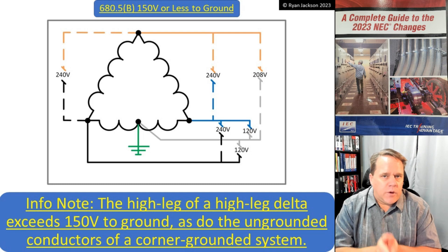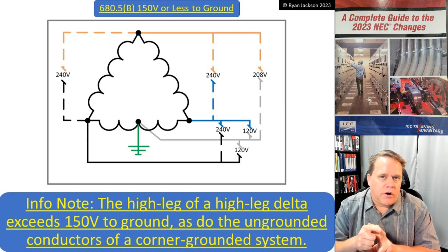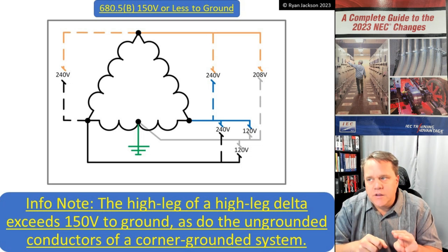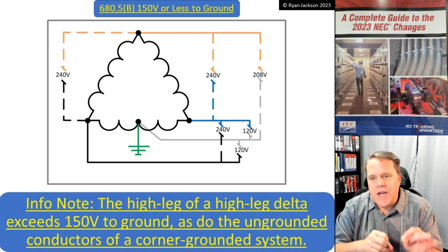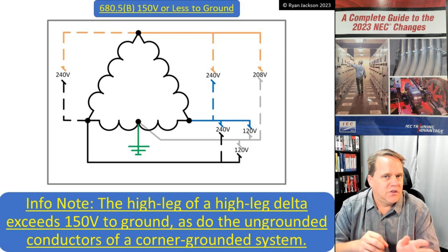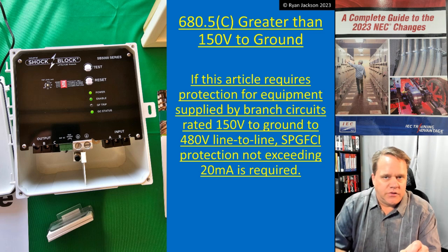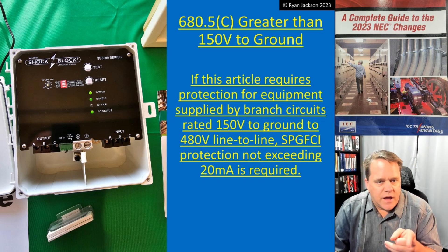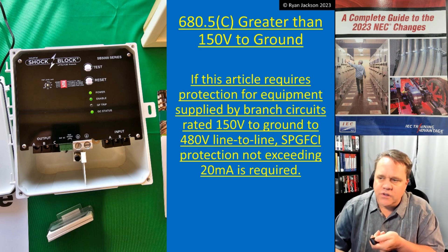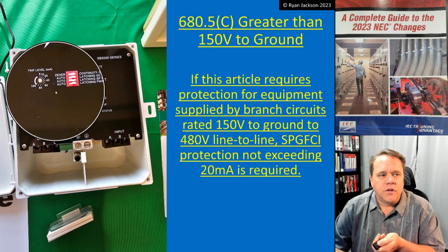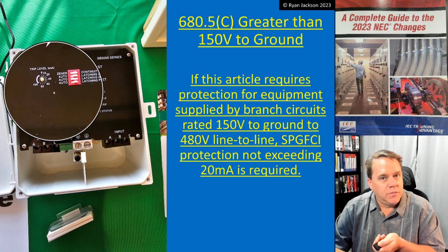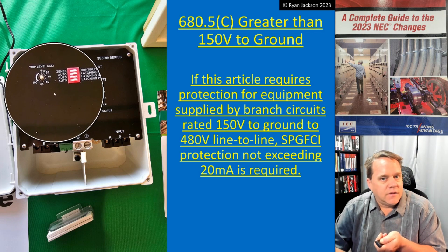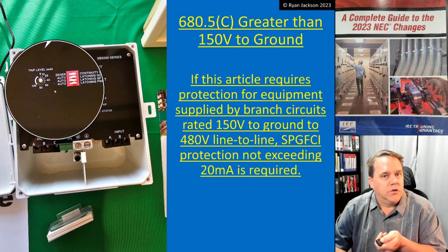This is reminding us, though, that if you have a high-leg delta, two of those phases operate at 120 volts to ground but the third operates at 208. So if I have a swimming pool motor fed off a high-leg delta, I can't put that on Class A GFCI protection — I would have to have it on a special purpose GFCI. That's what 680.5C talks about. This is a new section addressing a relatively new technology called special purpose GFCI protection. You can actually change the set points on that device — you can set it at 6 milliamps for Class A protection, or change it to 10 or 20 milliamps. Beyond that would enter into GFPE protection.